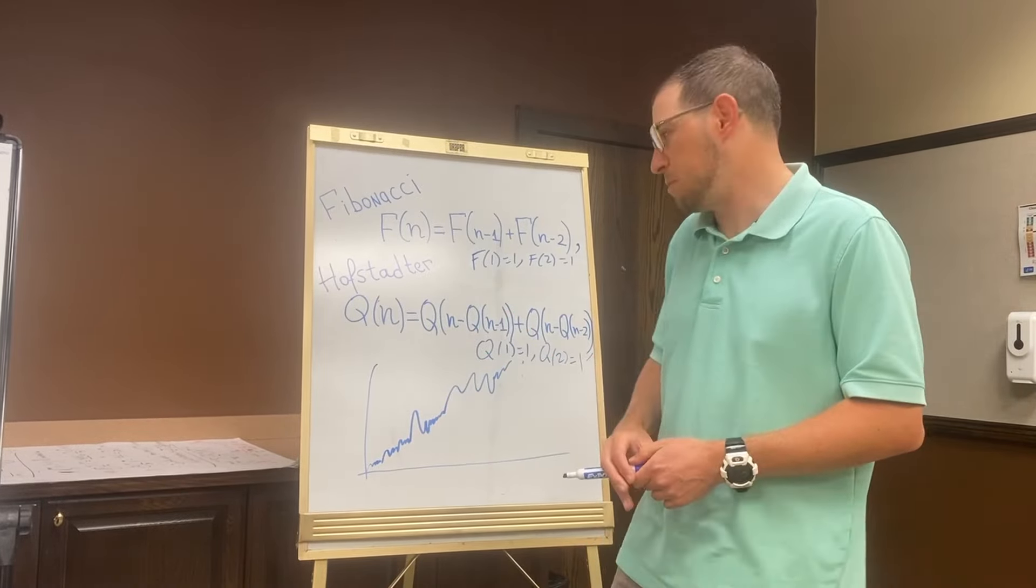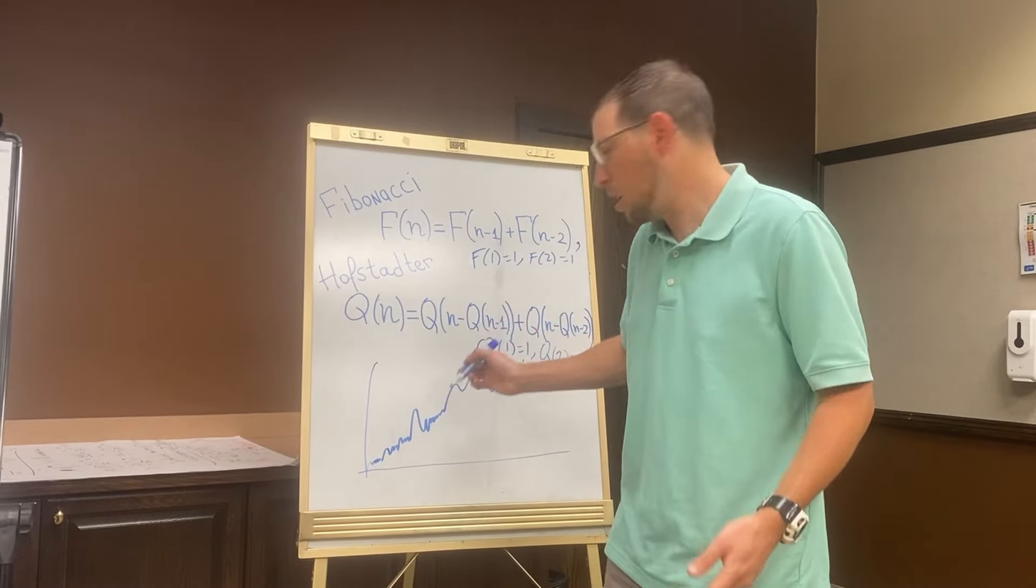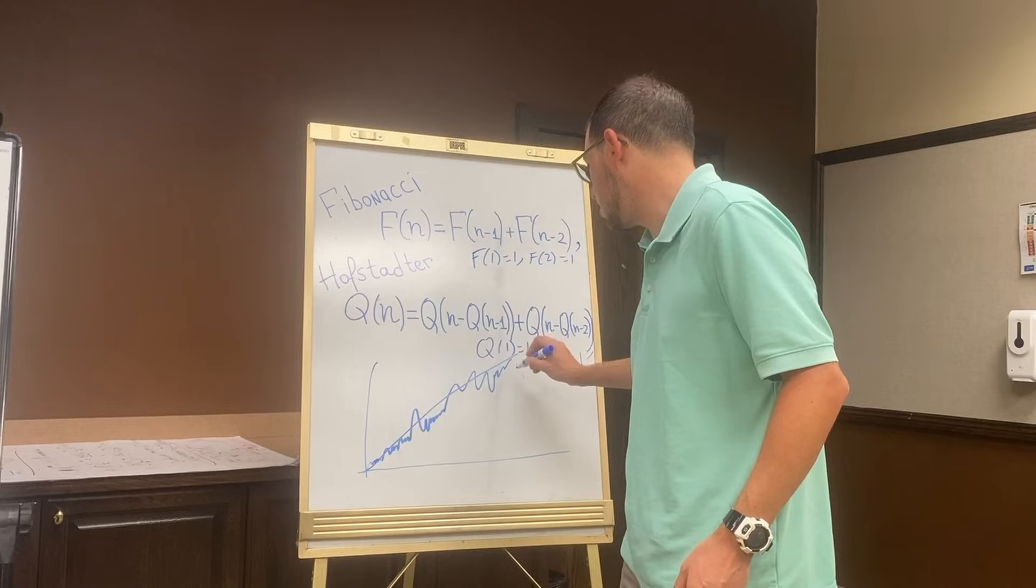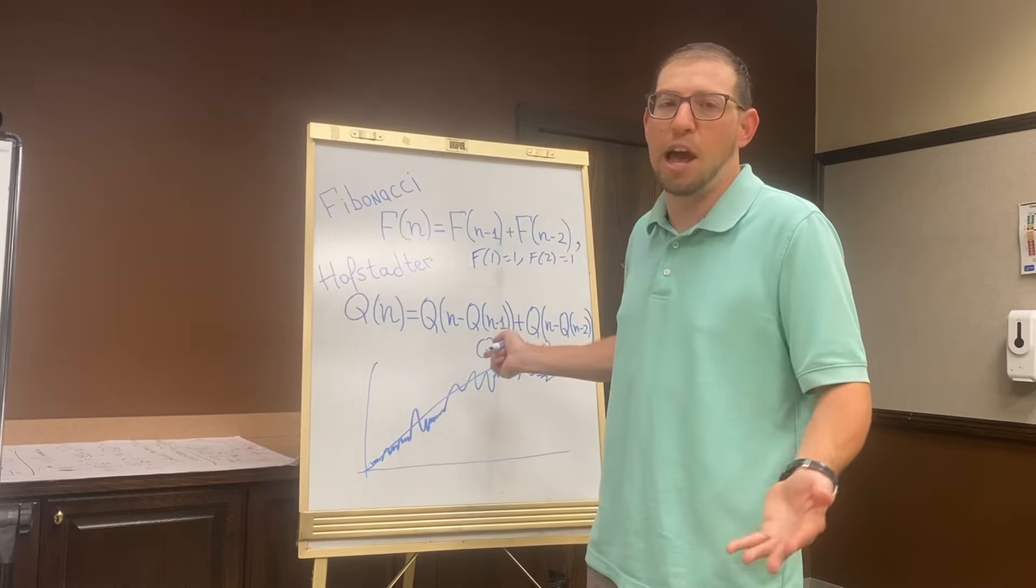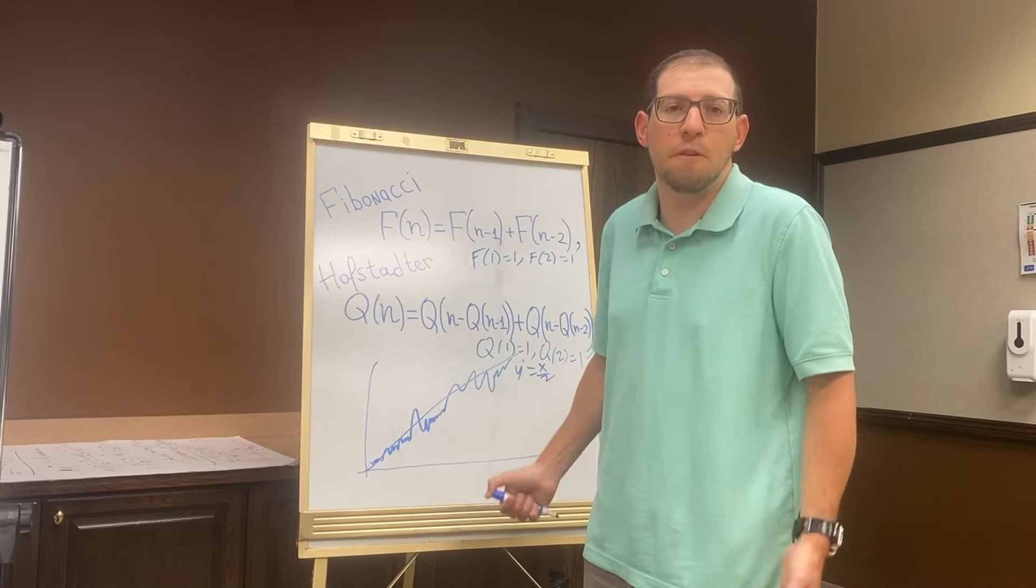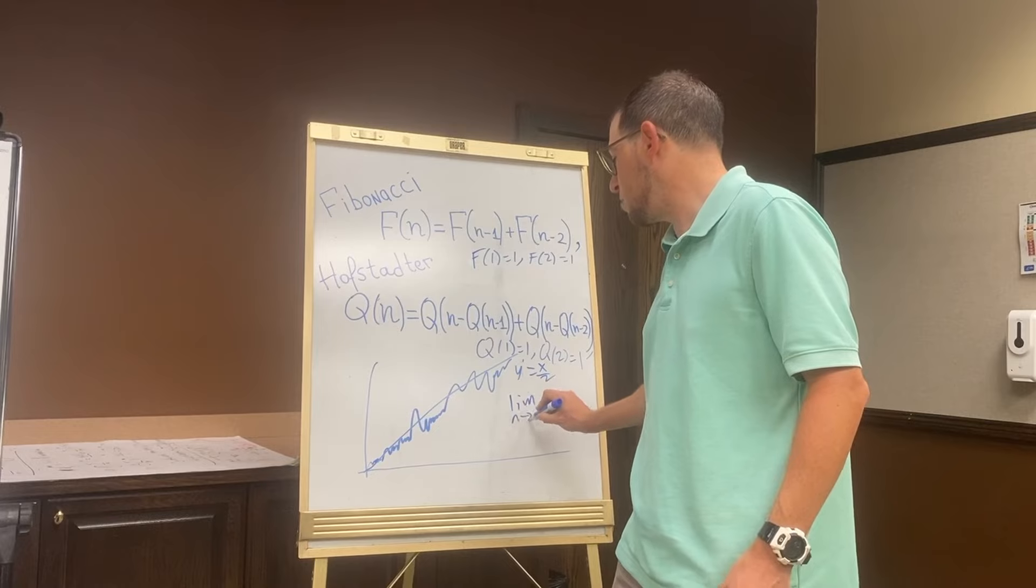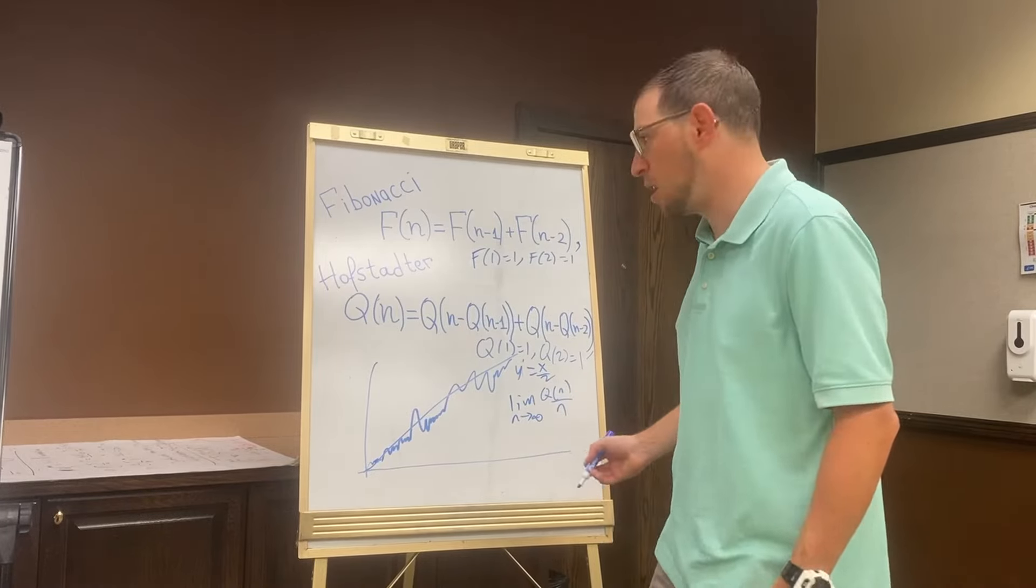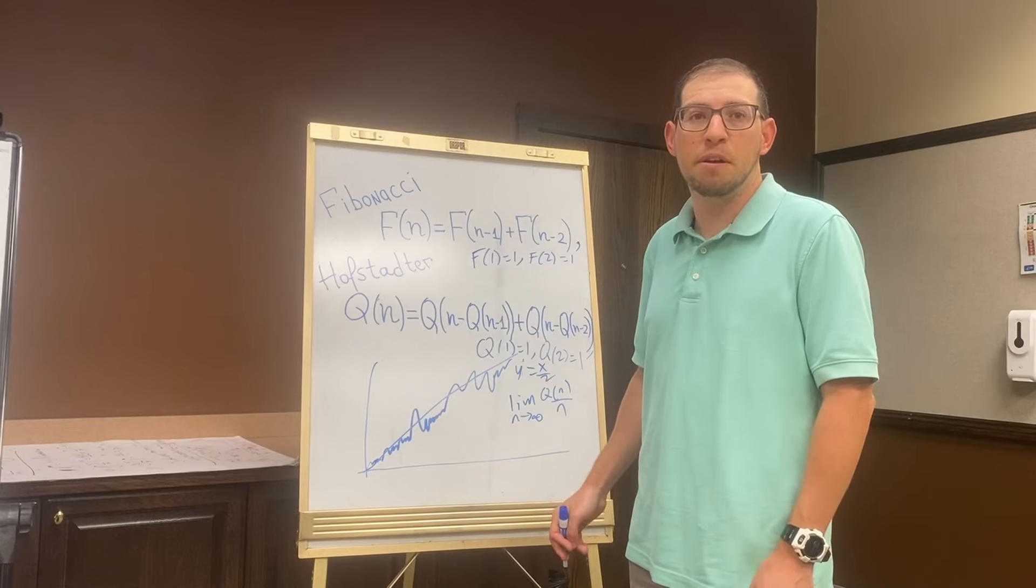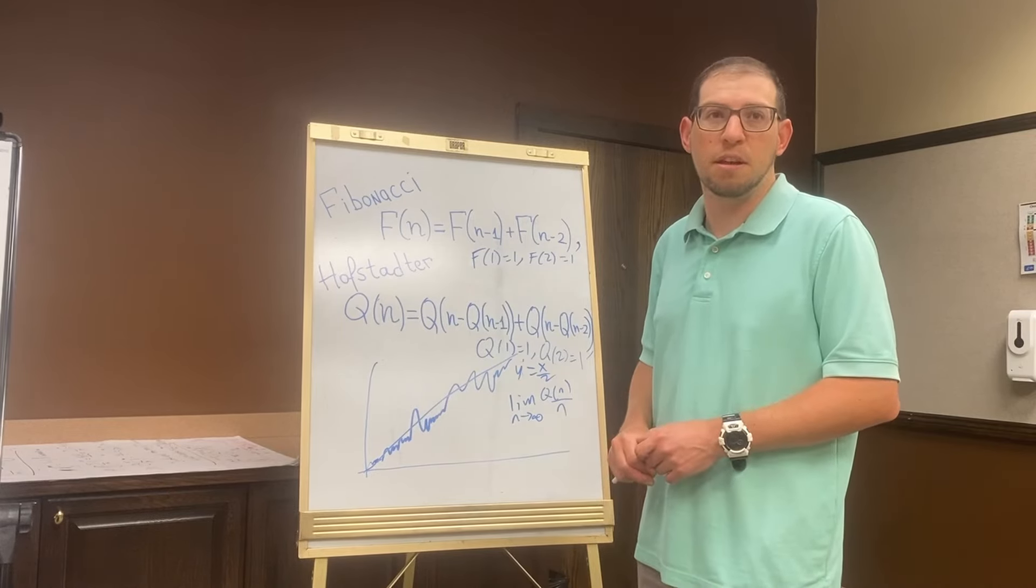There's two problems here. This thing does appear to kind of be along the line, and this line is y = x over 2, so the slope of this line is one-half. It's fairly easy to prove that if the limit as n goes to infinity of Q(n) over n exists, it has to equal one-half. But again, we don't know that this limit exists. In fact, we don't even know that this sequence is infinite.